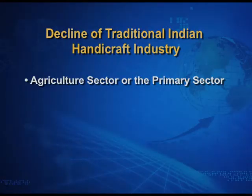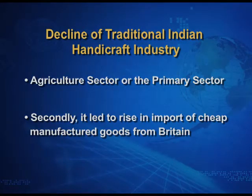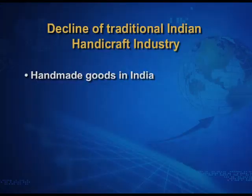That is why we talk about disguised unemployment in the agricultural sector or the primary sector. Additionally, the decline of Indian handicraft industry led to a rise in the import of cheap manufactured goods from Britain. The machine-made goods coming from Britain were cheaper in comparison to the handmade goods in India.